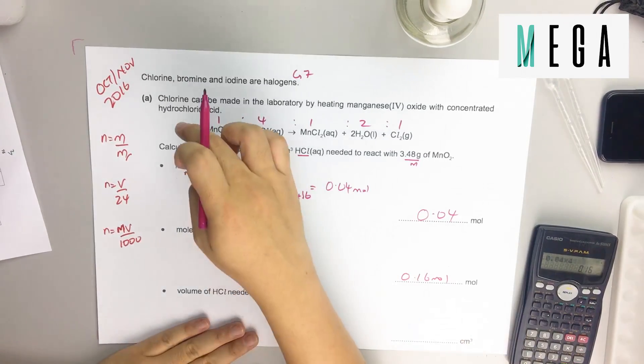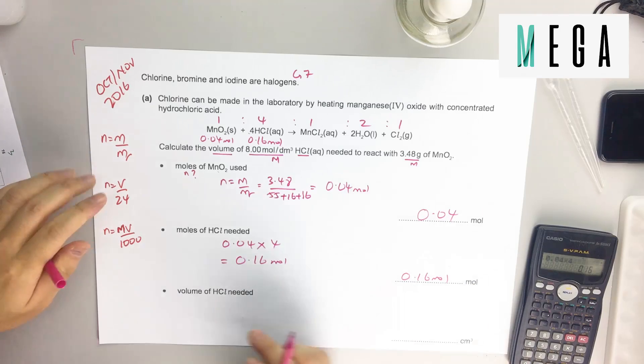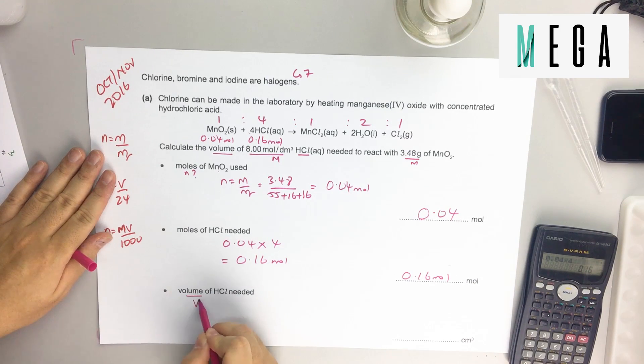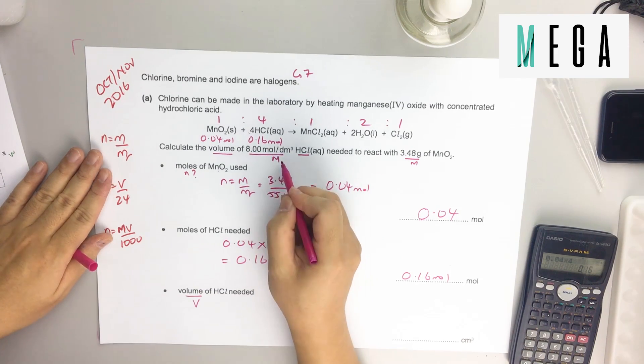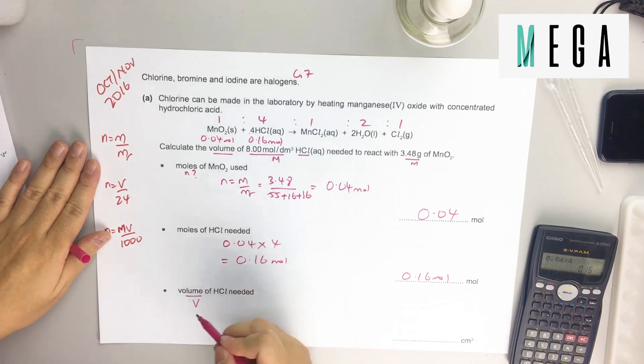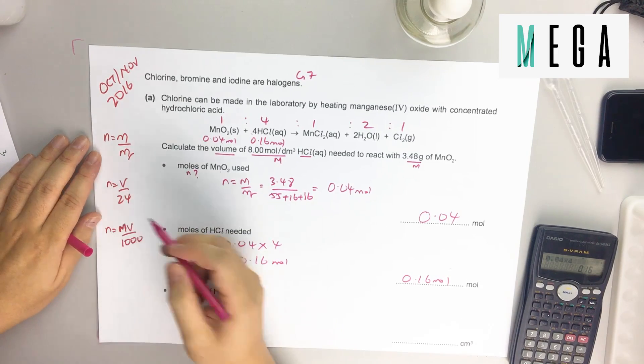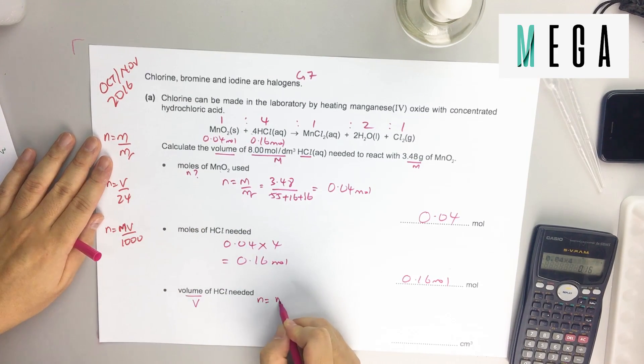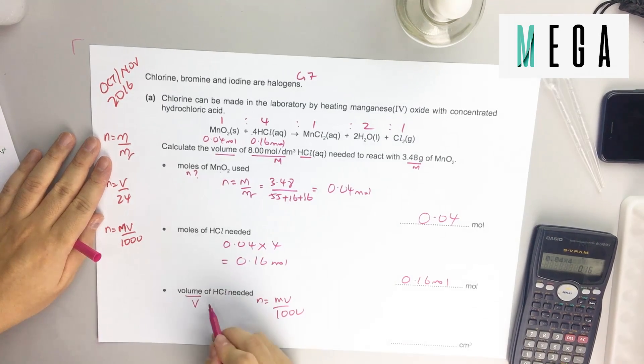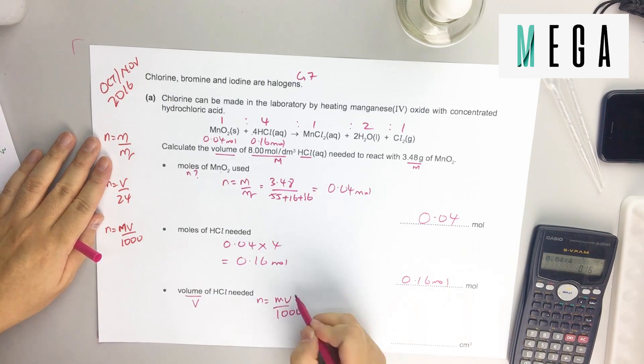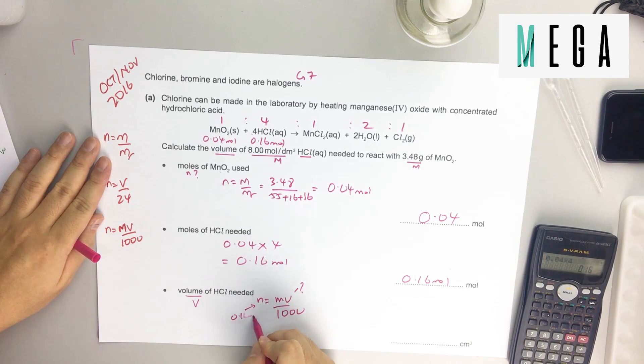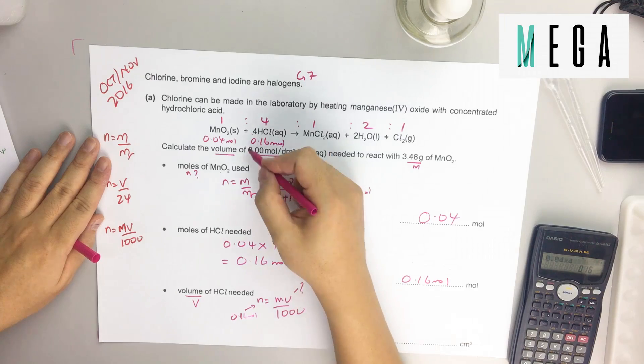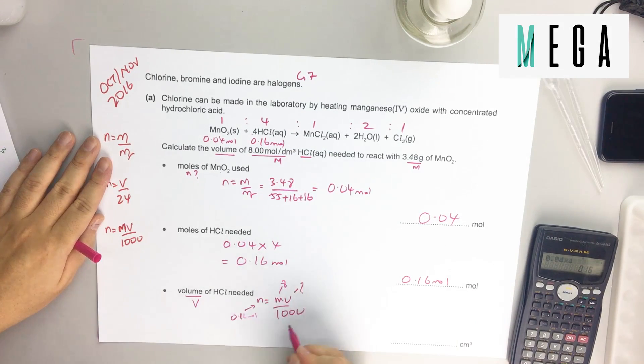Okay, so that's how you go from one chemical to another. Now the last step: volume of HCl, so V. What else is given? HCl, the M. So whenever they give you capital M (concentration) and you want to relate with V, you can always recall this formula. Since we need to find the volume of HCl, the number of moles we have is 0.16, then the concentration is 8. So you rearrange this: V equals n times 1000 over M.